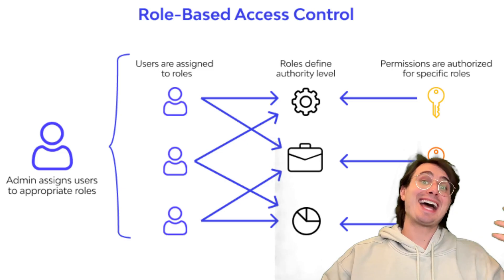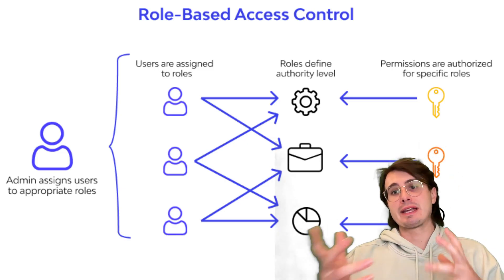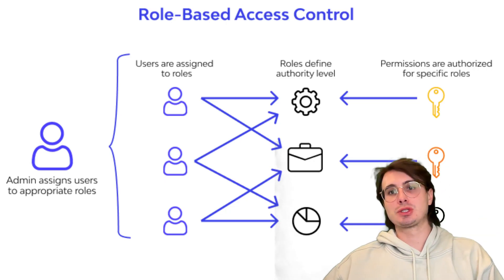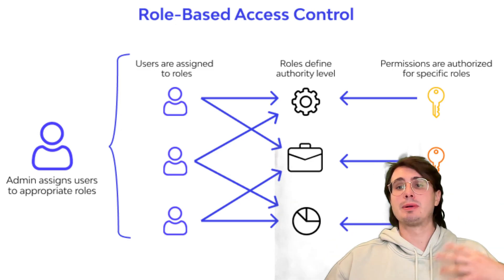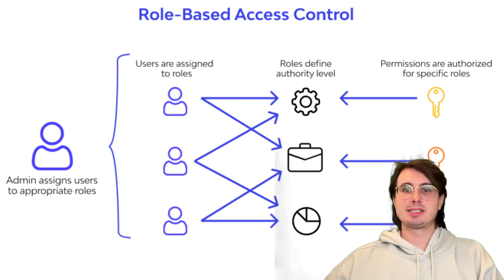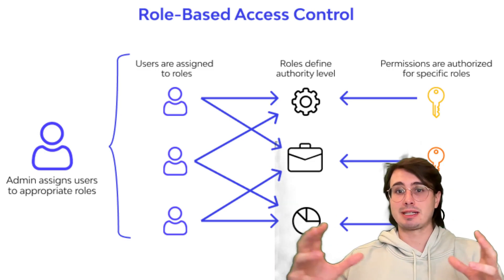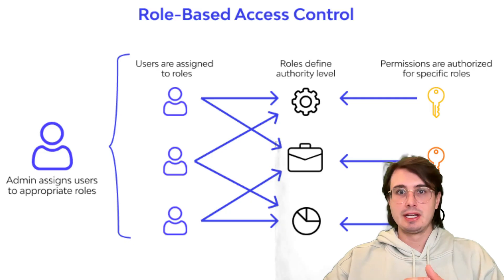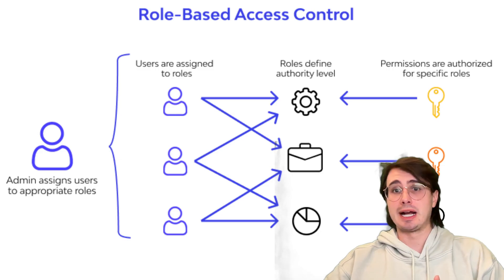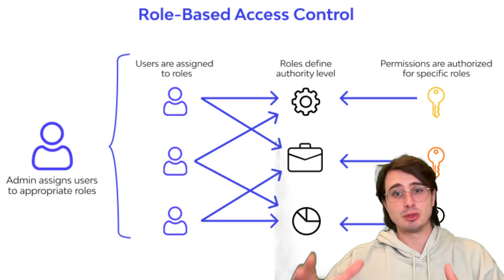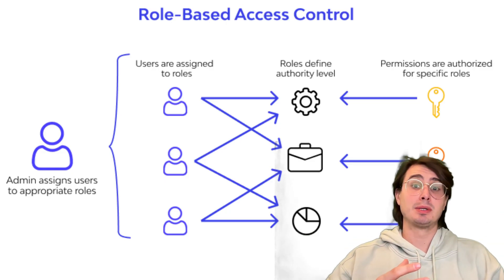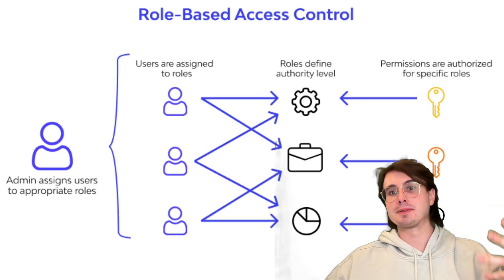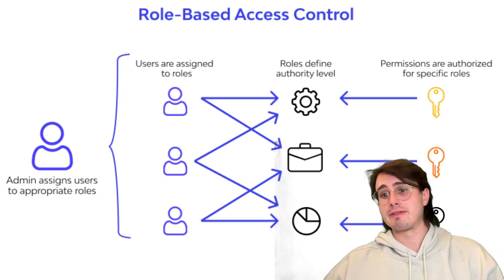Also implement attribute-based access control — dynamic access based on user, resource, and environment attributes. For example, a certain role might have higher access to a dev environment but much lower access to the same resource in production. Best practices include: implementing multi-factor authentication for all data access, using service accounts with minimal permissions scoped to what that service actually does, regularly auditing and reviewing access permissions, implementing just-in-time access for elevated privileges, and using federated identity management for external partners so permissions are managed and revoked automatically.